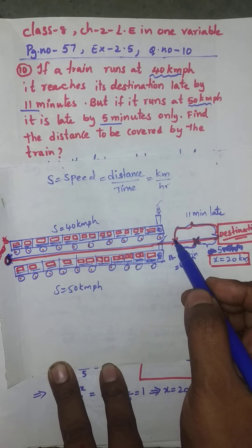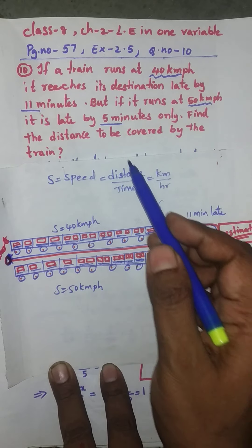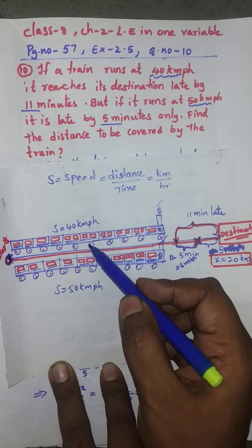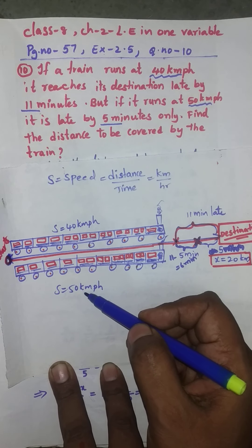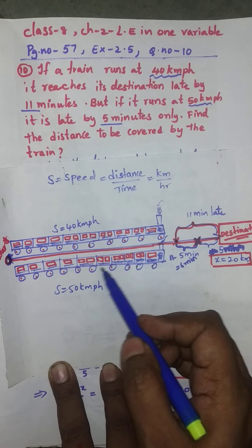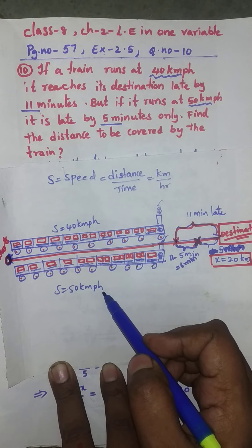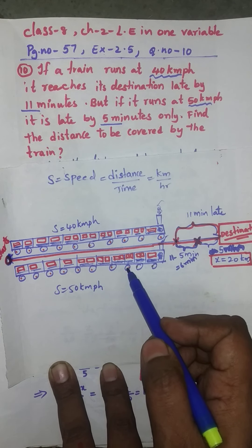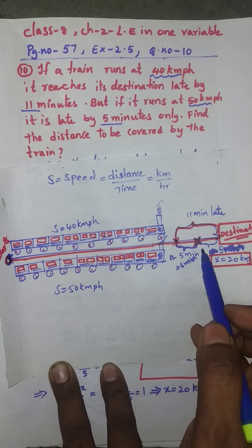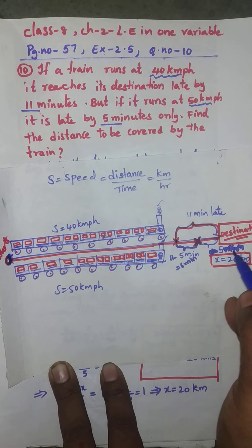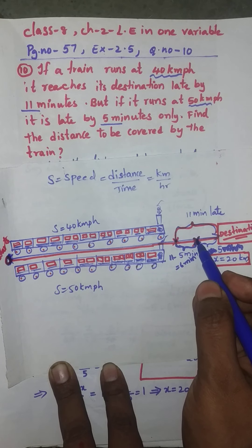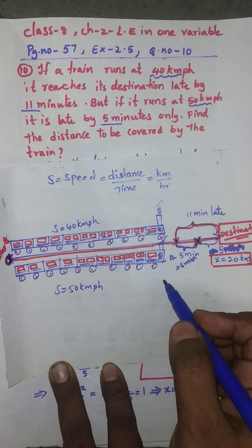But if the same train runs at 50 kilometers per hour — I have drawn one more train for your understanding — at 50 km/h, the train is late by only 5 minutes. So before 5 minutes, the train was here at this position.